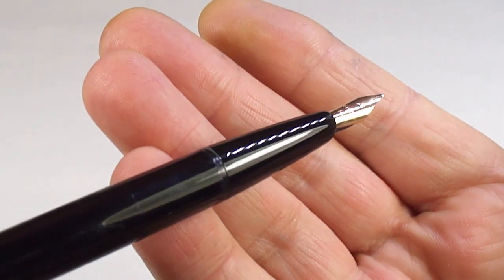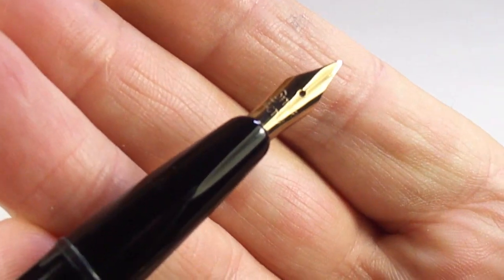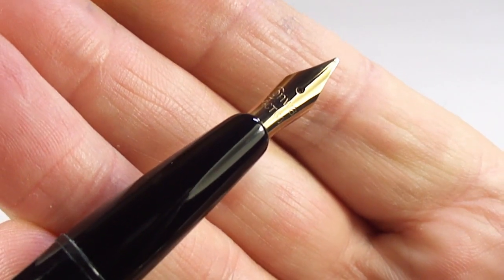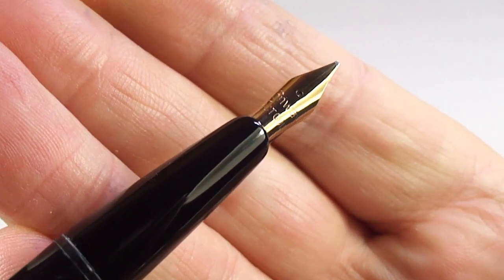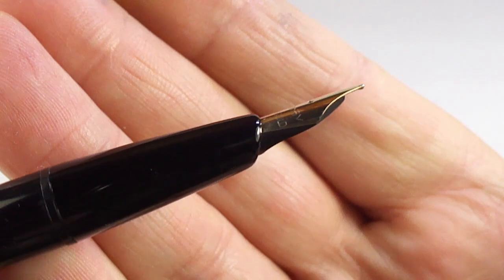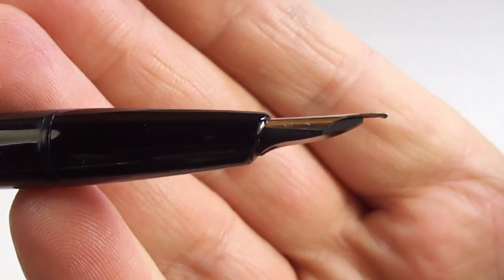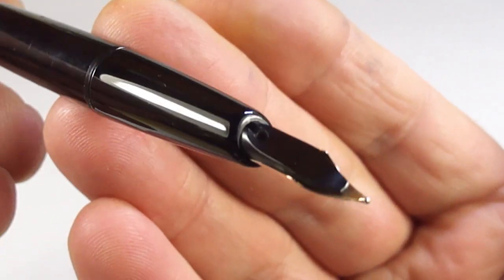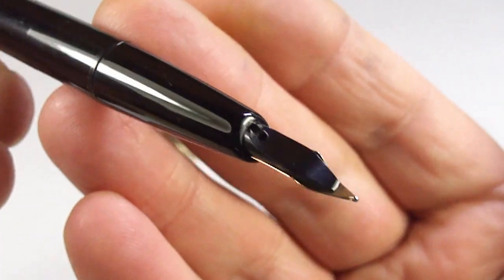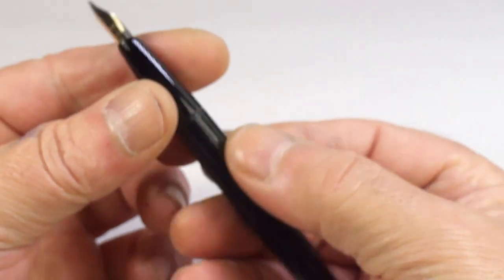The section tapers slightly down towards the nib. And if we show you the nib there, let's keep it nice and still. We've got a Conway 14 carat gold nib. There's a sideways view. There's the feed underneath. And everything is lovely and clean. We've restored it.